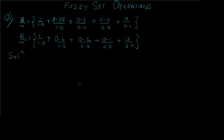As you can see on the screen we have two different fuzzy sets. This is the first fuzzy set B1 and this is the second fuzzy set B2, and this is how we represent fuzzy sets. For the first part we need to solve union — we need to calculate the union of B1 and B2.